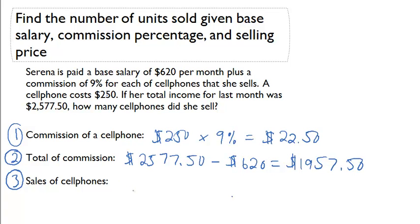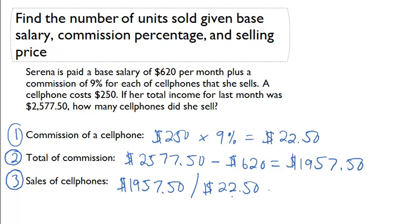Finally, for the sales of the cell phones, we're simply going to divide her total commission of $1,957.50 divided by the commission of a cell phone, $22.50. And that's going to give us a final answer of 87 cell phones.